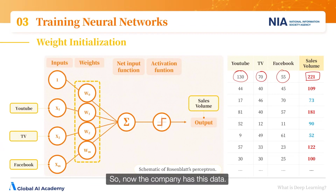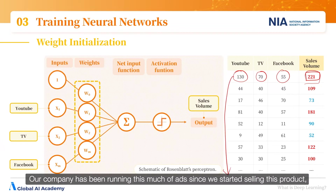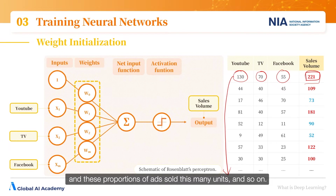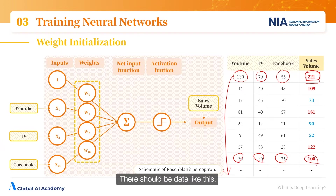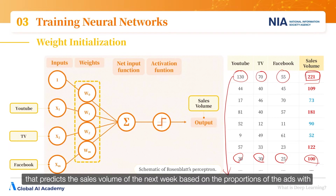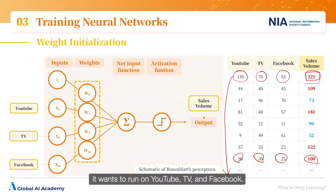The company has this historical data — it has been running ads since it started selling this product, and these proportions of ads sold this many units. For example, running ads in the 30, 30, 25 proportion resulted in 100 units sold. With such data, the company wants to build a model that predicts next week's sales volume based on the proportions of ads it wants to run on YouTube, TV, and Facebook.